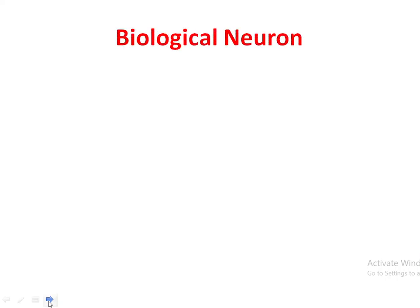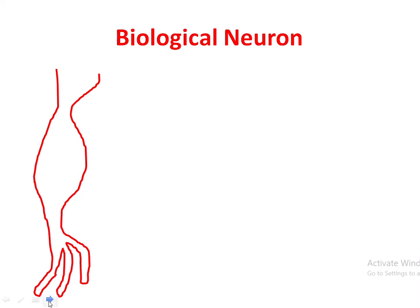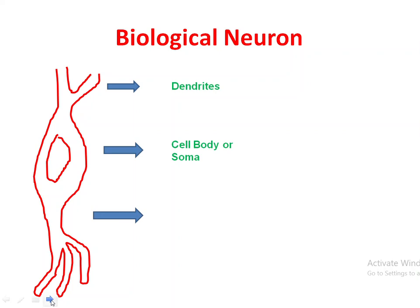First we need to see the biological neuron — this is the shape of a biological neuron. There are four parts in a biological neuron: the first one is dendrites, the second one is cell body or soma, the third one is axon, and the fourth one is synapse.